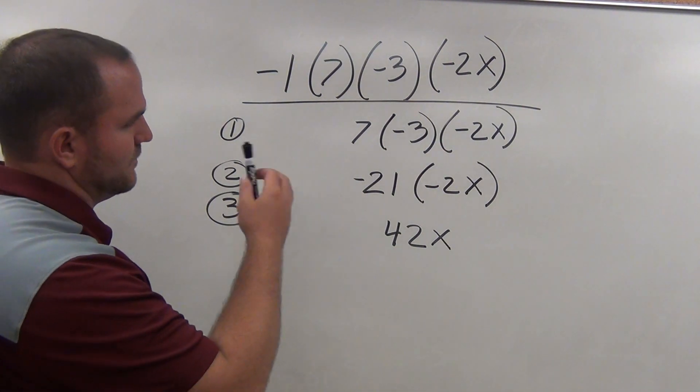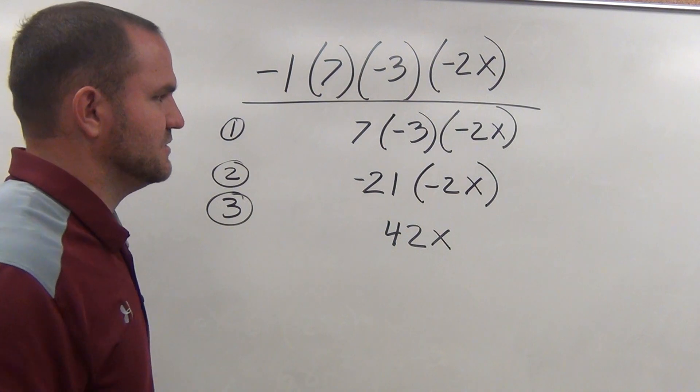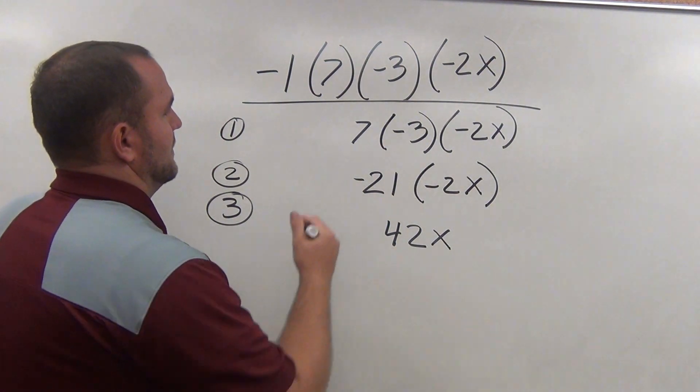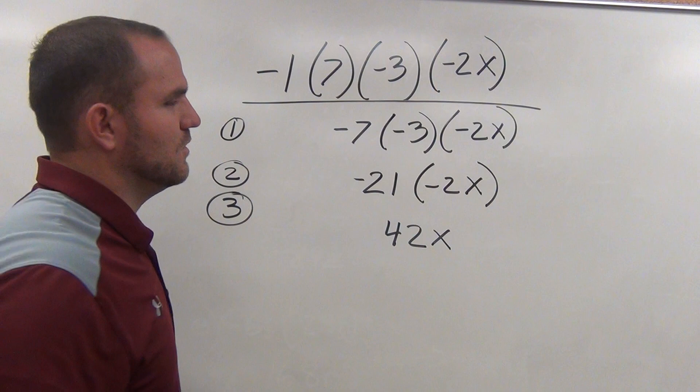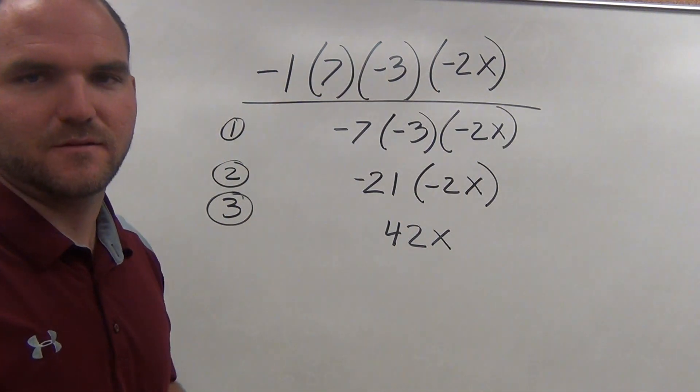So, let's see. Negative 1 times 7, our answer should actually be negative. Okay. So, we caught a mistake in the first step.